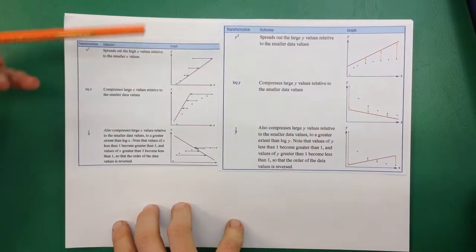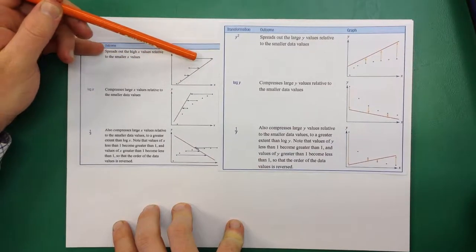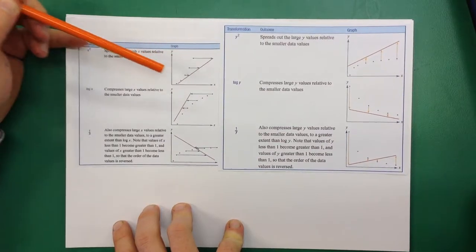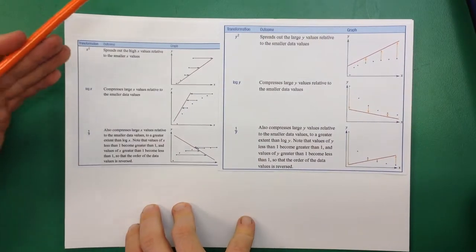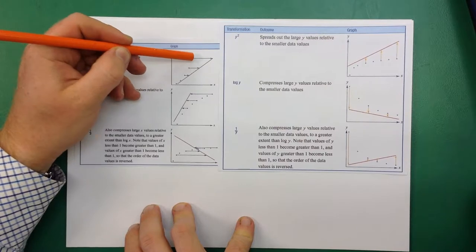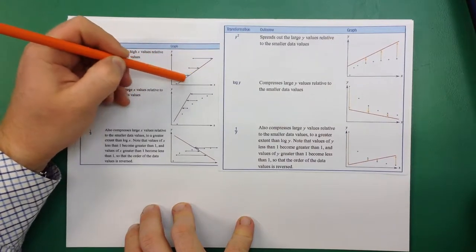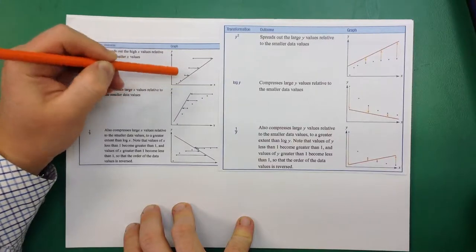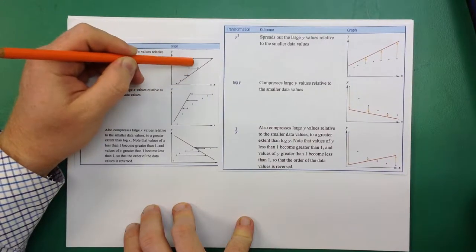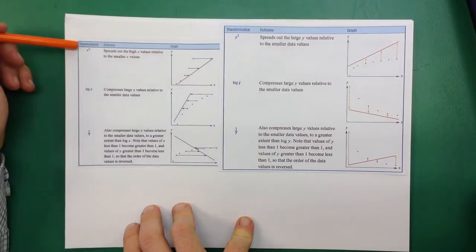Here's an example of something that was originally an x-squared graph. You can see these dots down here. When we changed our axis, our x-axis to an x-squared axis, what we did is we shifted all these values over, we stretched them over across to make them linear. The ones down the bottom, the small ones, didn't get affected very much. But the bigger these numbers got, the more they got stretched across when we squared them.